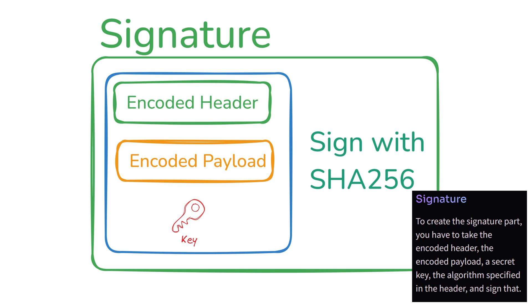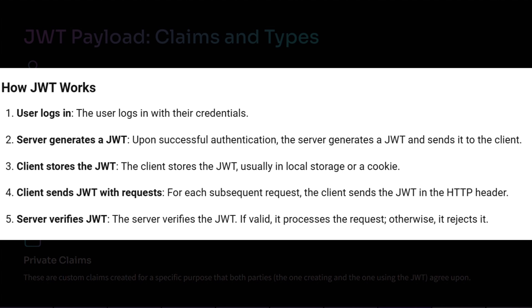Let us understand the overall flow of a JWT request. First, the user logs in with their credentials and upon successful authentication, the server generates a JWT and sends it to the client. The client stores the JWT, usually in local storage or a cookie, and for every subsequent request, the client sends the JWT in the HTTP header. The server verifies the JWT — if valid, it processes the request; otherwise, it rejects it.